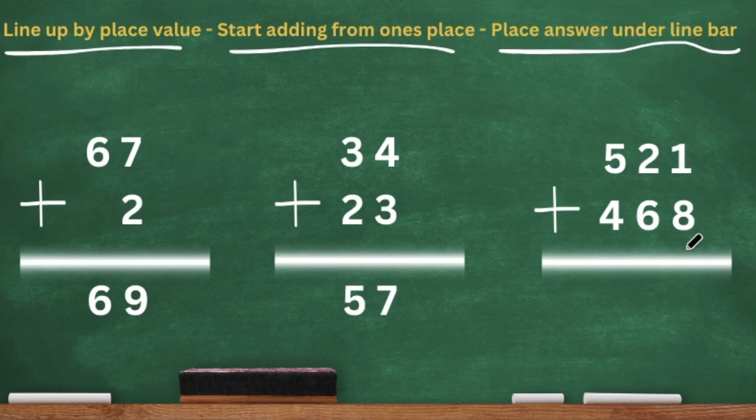Now let's start in the ones place. One plus eight is nine. Then we go to the tens place. Two tens plus six tens is eight tens. Then we'll go to the hundreds place. We have five hundreds plus four hundreds, which is nine hundreds. Our total answer is 989.